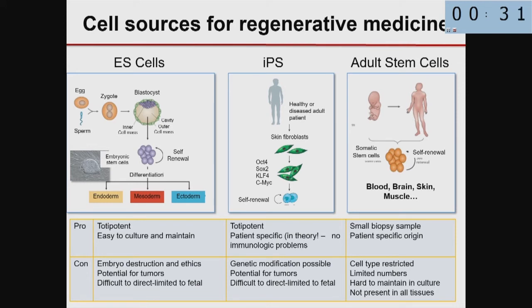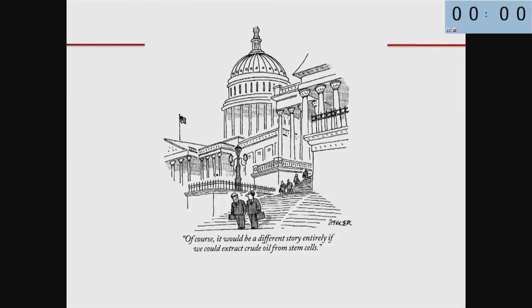To recapitulate: there are three types of cell sources for regenerative medicine — embryonic stem cells, induced pluripotent cells, and tissue-specific stem cells — each with its relative advantages. Right now the biggest strides in therapy have been with adult stem cells, but people are working hard to improve the quality of the others and overcome the tumorigenicity issues. I'd like to close with this: it would be entirely different, he says coming out of Congress, if we could extract crude oil from stem cells.